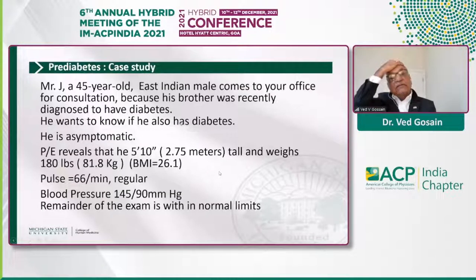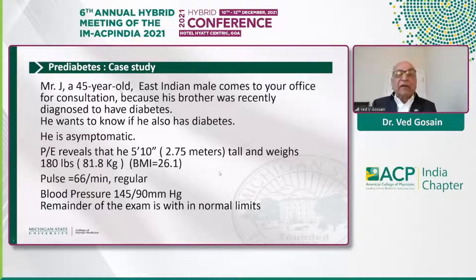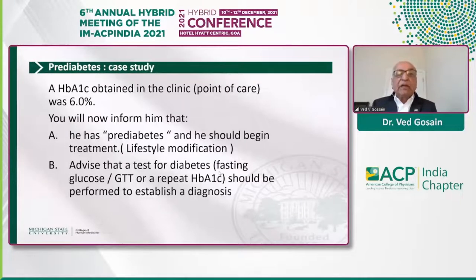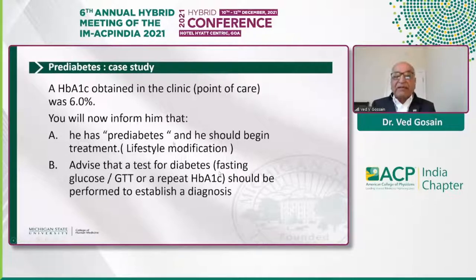Let me present a case: a 45-year-old East Indian male comes to your office because his brother was recently diagnosed with diabetes, and he wants to know if he also has diabetes. He's 5 feet 10 inches tall, 180 pounds, BMI 26.1, pulse 66, blood pressure slightly elevated, and the rest of the exam is completely normal. Hemoglobin A1c was obtained as a point-of-care measurement in the clinic, and it was 6%.